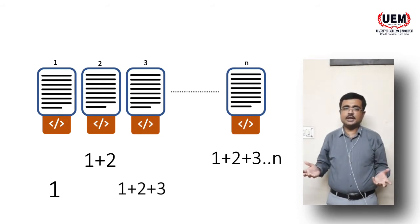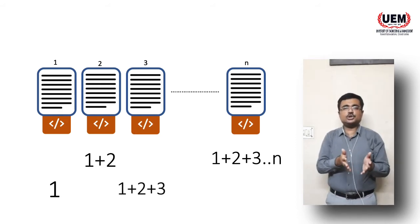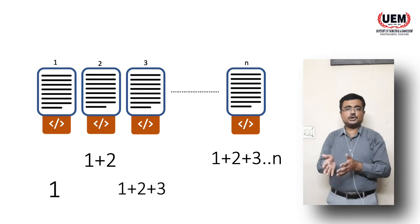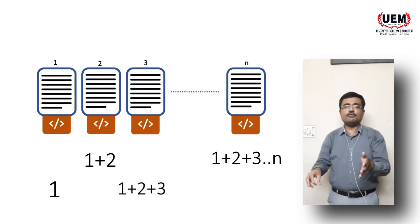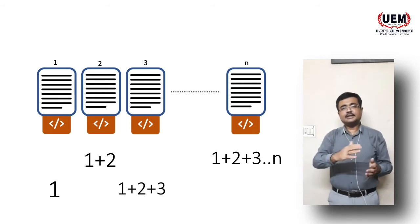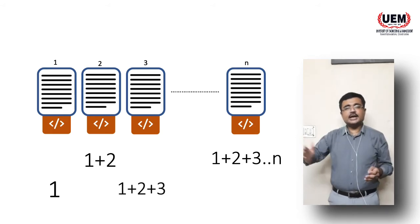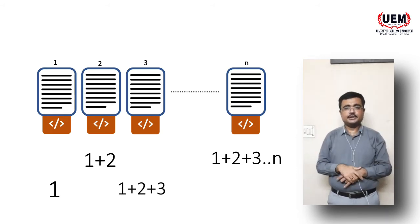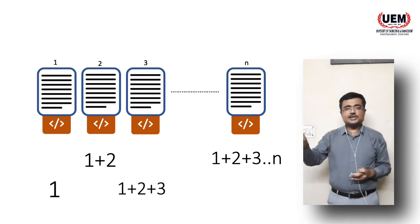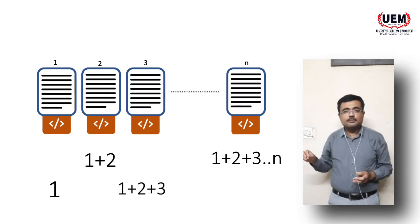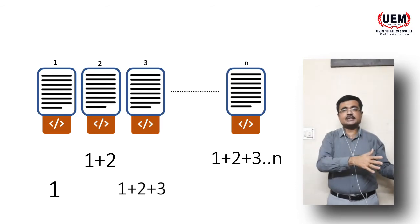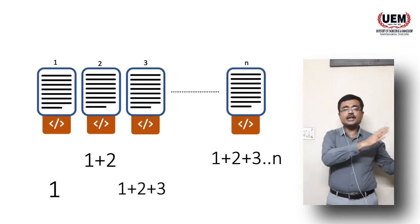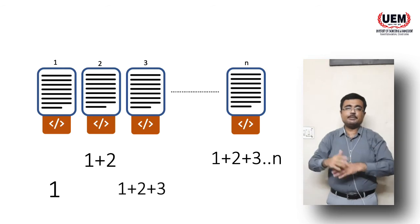For page four, the same thing: page one content, page two content, page three content, all together mapped to a code and put at the bottom of page four. This continues up to page N. So all these pages contain a code which is made out of the data of all contents starting from the first page up to that page.